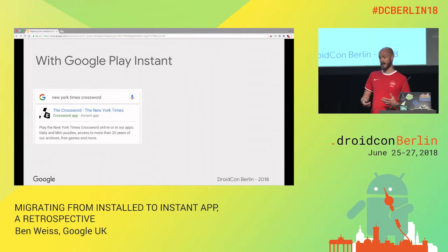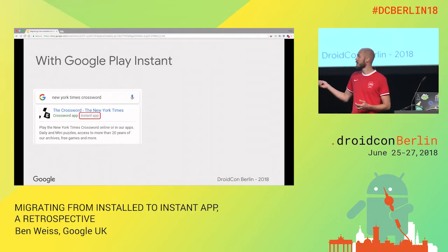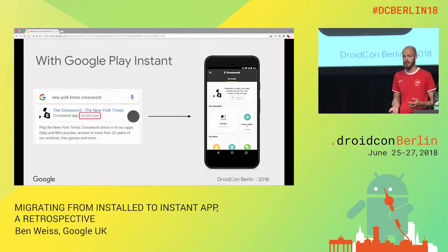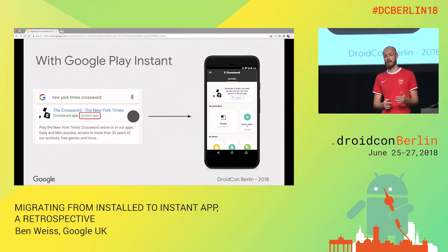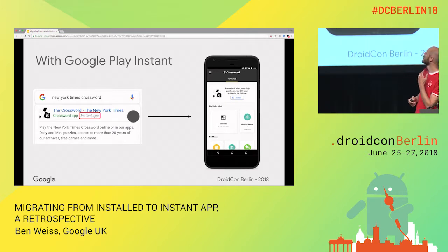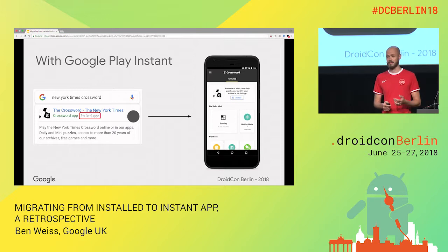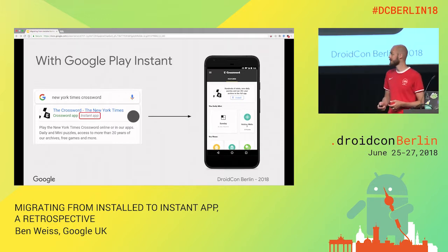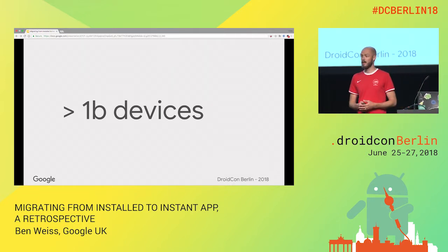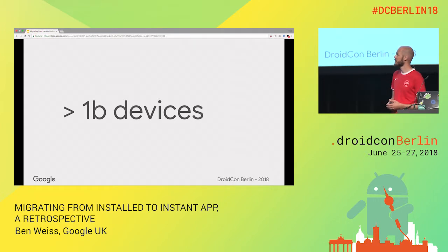Let's see what it does and how it actually works. I searched for the New York Times crossword and in the search results you can see it says it has an Instant App. When I tap on that search result, the app opens immediately. I don't have to install it — I don't have to go through the Play Store and actively decide to download it, but it can launch immediately. You can go to today's crossword puzzle straight away from that link. It's available to more than a billion devices and we're expanding that.